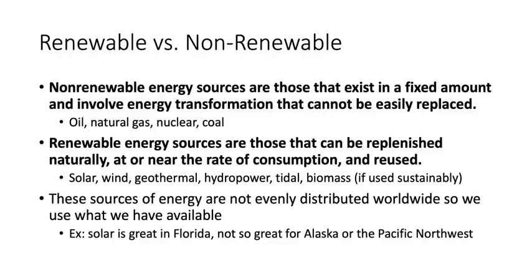Renewable resources are energy sources that are easily replenished or do not get used up. For example, the sun powers solar and wind energy and isn't going anywhere. Geothermal uses the heat of the earth, hydropower comes from river flow, and there's also tidal energy and biomass. Biomass is a little tricky — if used at a rate faster than it can be replaced, it becomes non-renewable. Biomass includes wood and plant matter; as long as we allow those plants to grow back, it's considered renewable.